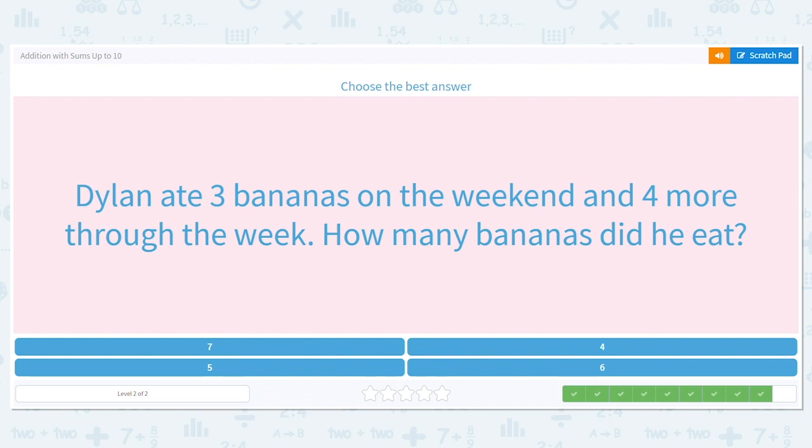Let's try one more. Dylan ate three bananas on the weekend and four more throughout the week. How many bananas did he eat? That's a lot of potassium. Good for him.